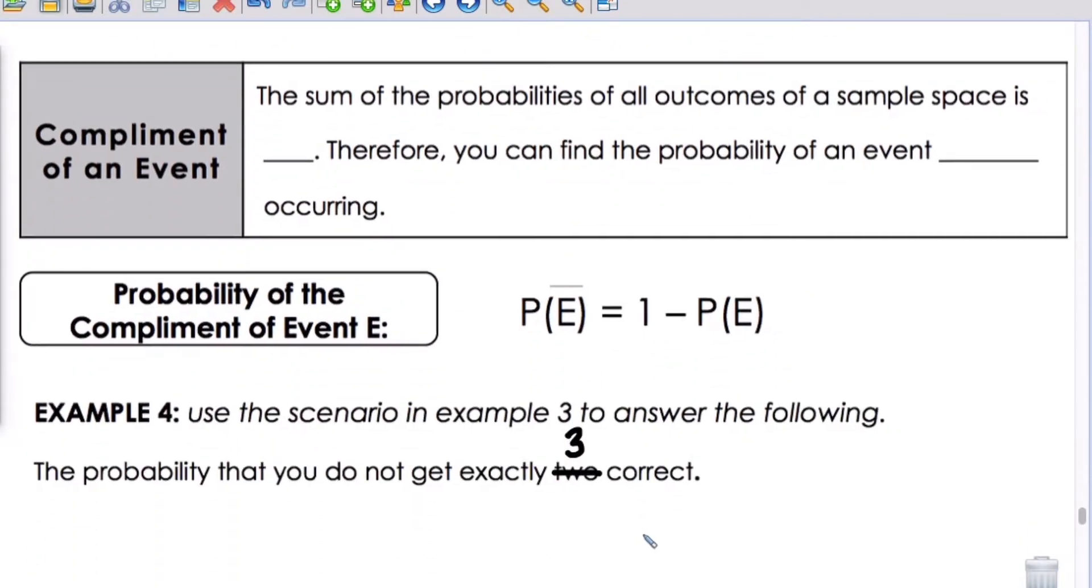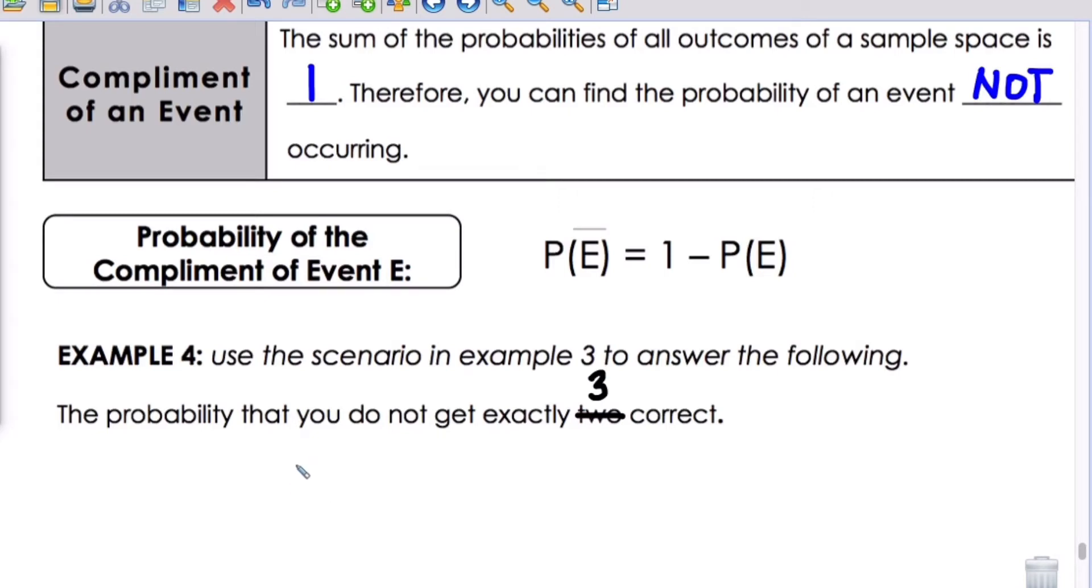Complement of an event. The sum of the probabilities of all outcomes of a sample space is one. Therefore, you can find the probability of an event not occurring. Here would be our formula: the probability of an event not occurring is one minus the probability of the event occurring. Example four: use the scenario in example three to answer the following. The probability that you do not get exactly three correct. We would take, remember we said we have a 25% chance, so we could do one minus one-fourth, which gives us three-fourths, which gives us 75% chance.